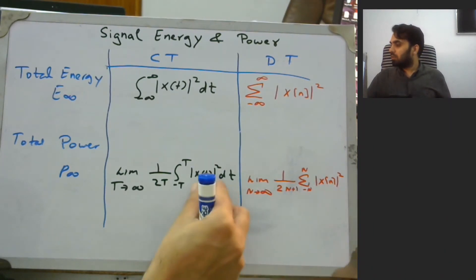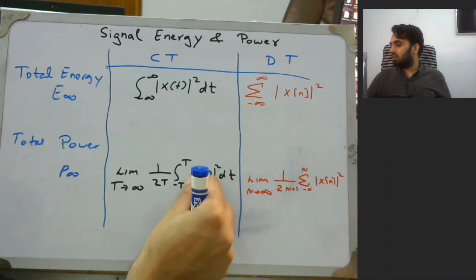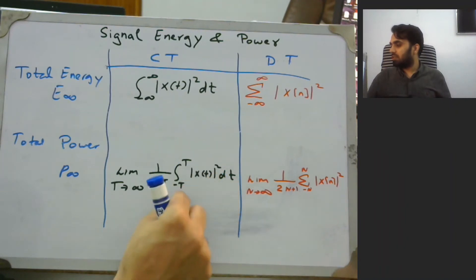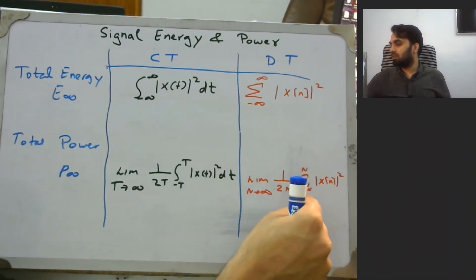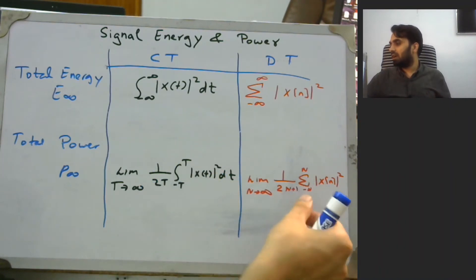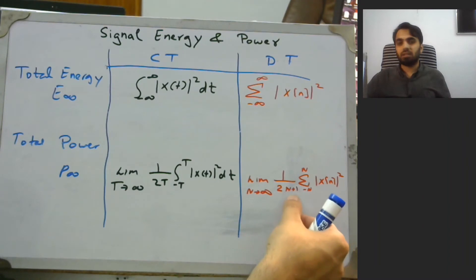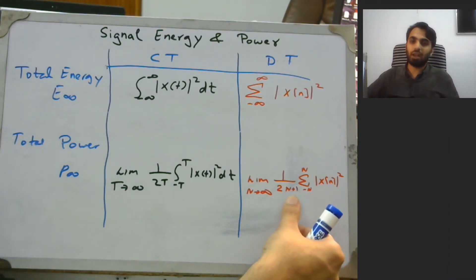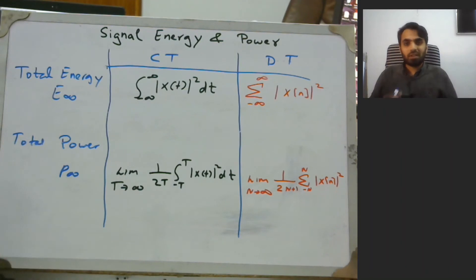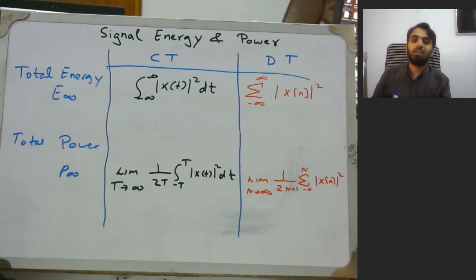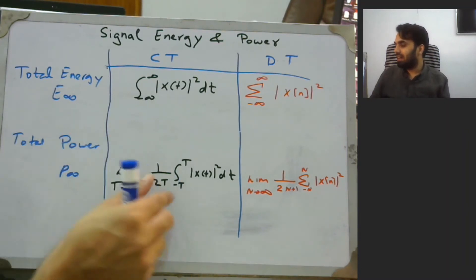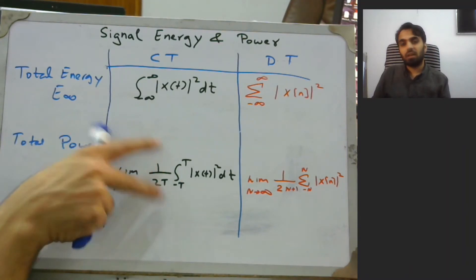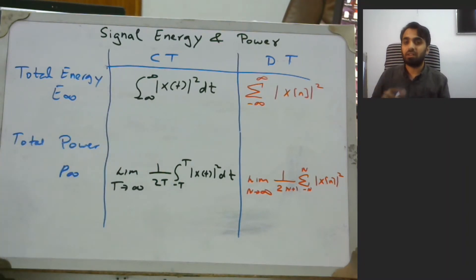Rather than integration, in discrete time we have a summation, and the denominator is 1/(2N+1). Total power is a very powerful tool when quantifying or categorizing periodic signals — we can take one time period and based on that measure P_infinity.